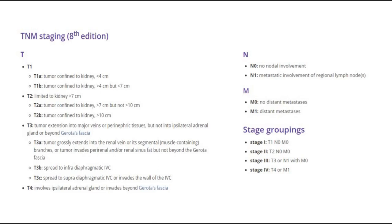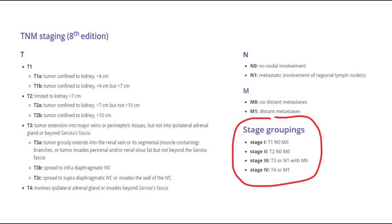For N staging, it is N0 or N1; if there is metastasis to the lymph nodes, it is N1. For M staging, if there is distant metastasis to other organs, it is M1. The staging groupings are stages 1 through 4, as shown here. T3 or N1 is considered stage 3, and distant metastasis is stage 4.